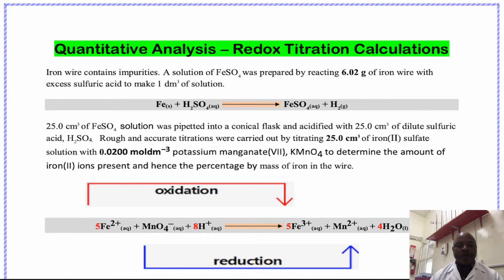25 cm³ of iron(II) sulfate solution was pipetted into a conical flask and acidified with 25 cm³ of dilute sulfuric acid. Rough and accurate titrations were carried out by titrating 25 cm³ of iron(II) sulfate solution with 0.02 mol per dm³ potassium manganate(VII) to determine the amount of iron(II) ions present and hence the percentage by mass of iron in the wire.